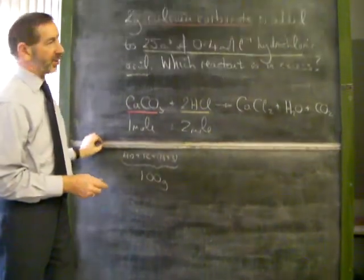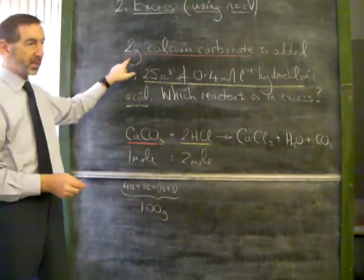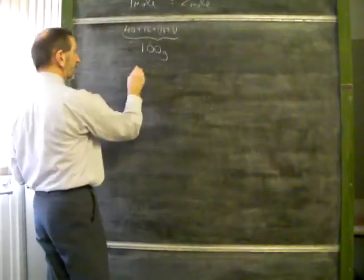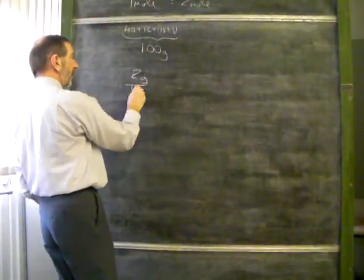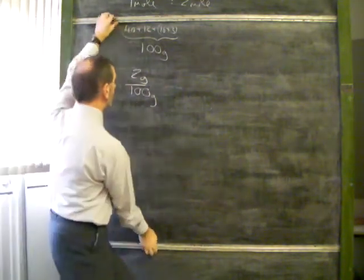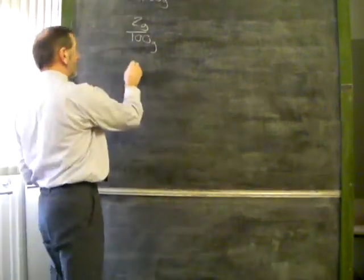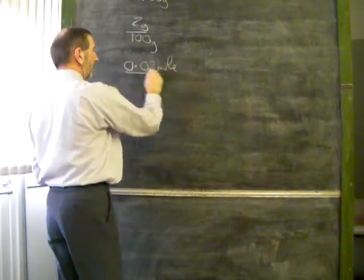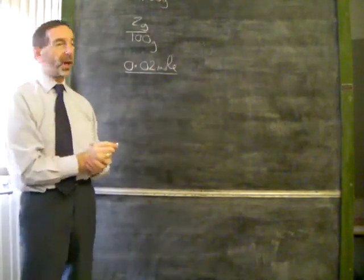If we don't have 100 grams of calcium carbonate, we only have 2 grams. So how many moles is this? The answer is 2 grams divided by 100. It's this fraction of a mole. When you do this sum, the answer comes to 0.02 of a mole. That's how much calcium carbonate we have.